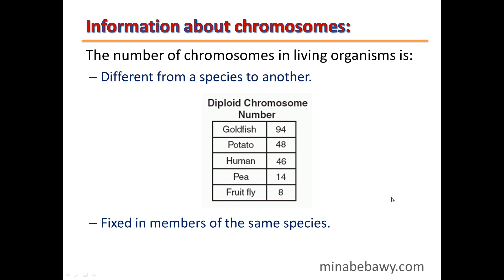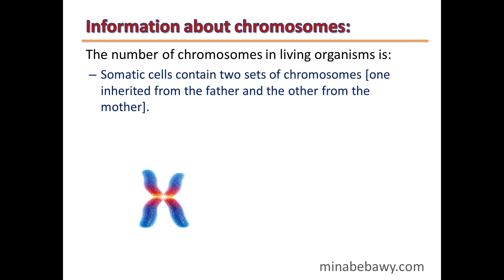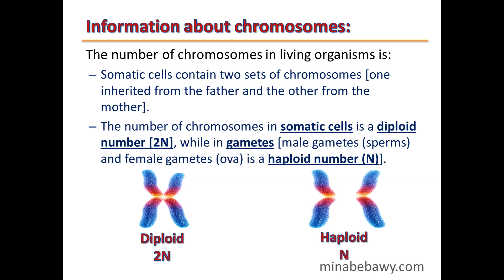The number of chromosomes is fixed within members of the same species. Somatic cells contain two sets of chromosomes — one inherited from the father and the other from the mother — giving a diploid number, or 2N. Gametes such as sperms and ova have a haploid number, N. When a sperm fuses with an ovum, each containing half the number of chromosomes, they form a zygote with the full diploid number.